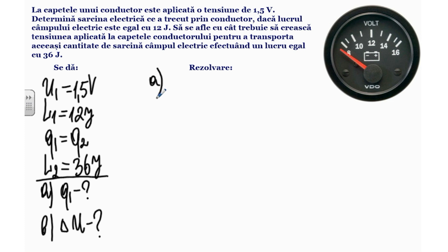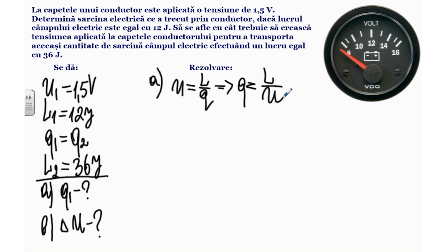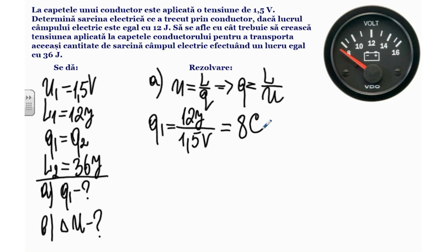Punctul A: din formula tensiunii, U egal cu L împărțit la Q, vom exprima cantitatea de sarcină: Q egal cu L împărțit la U. Folosind valorile din primul caz, Q1 egal cu L1 împărțit la U1, adică 12 joule împărțit la 1,5 volt. Calculând, obținem o cantitate de sarcină egală cu 8 coulombi.